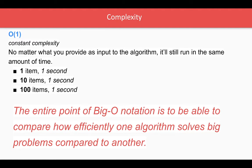The entire thing we're denoting using Big-O notation. Big-O notation is to be able to compare how efficiently one algorithm solves big problems compared to another, and we're checking the performance of the algorithm by increasing the data with the time.